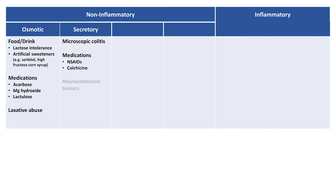Several rare neuroendocrine tumors which produce hormones can cause secretory diarrhea — in particular, carcinoid syndrome caused by a serotonin-secreting GI or lung tumor, and a gastrin-secreting tumor known as a gastrinoma, which is also known as Zollinger-Ellison syndrome.